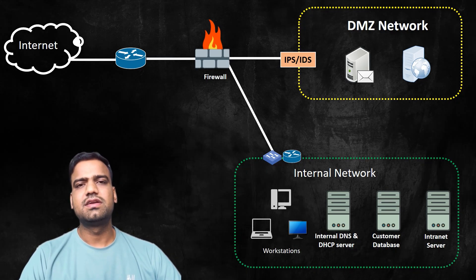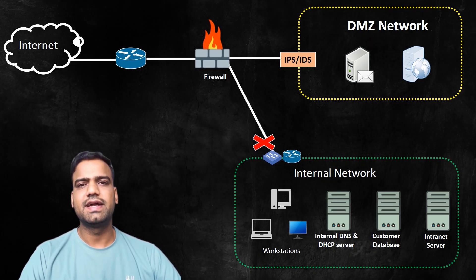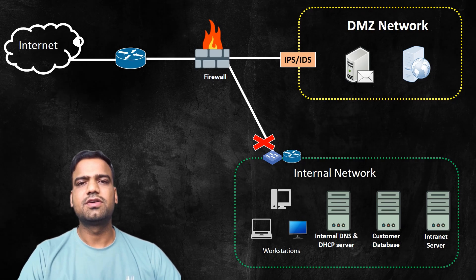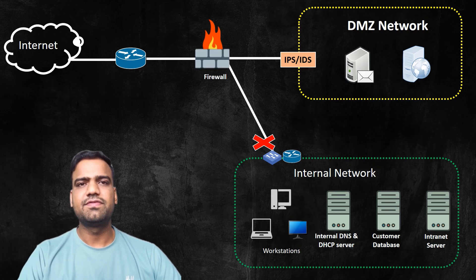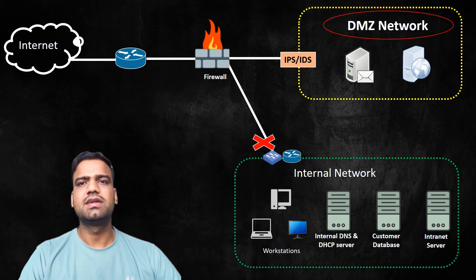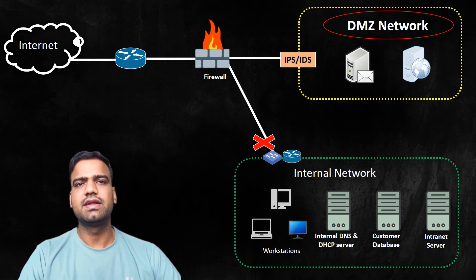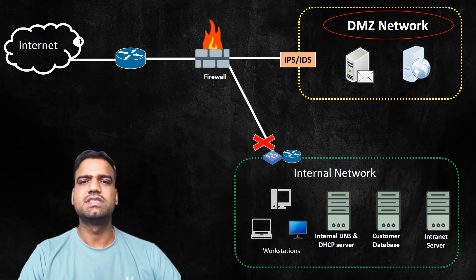By not allowing external users to access the internal network directly, the organization adds a layer of protection to its critical systems. This is because the firewall blocks traffic from the DMZ to the internal network. Even if external entities compromise the DMZ, they still cannot access critical internal servers, which maintains the security of sensitive data.